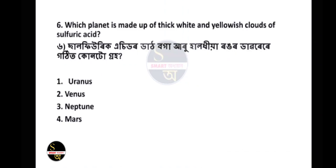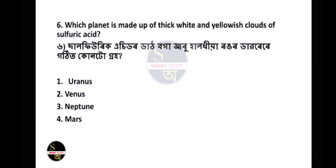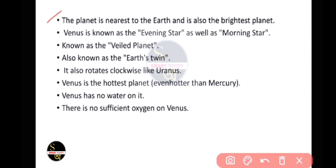Question 6: Which planet is made up of thick white and yellow clouds of sulfuric acid? The answer is Venus. Important points about Venus: it is the nearest planet to Earth and also the brightest planet. Venus is known as both the evening star and the morning star.